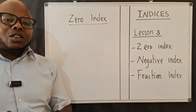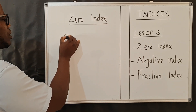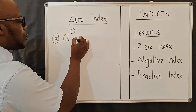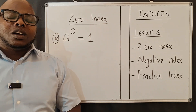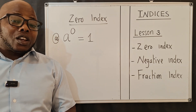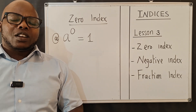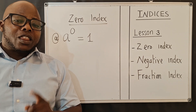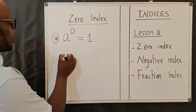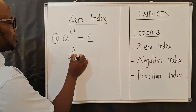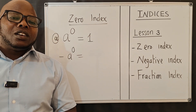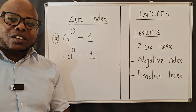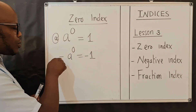Let's start with the first one: the zero index. The zero index says that when you've got a base 'a' and the exponent is zero, this will give us one. Now, as teachers we like saying anything to the power zero equals one, but that's not entirely true. What if we've got negative a to the power zero? We are not going to get positive one — we should get negative one.